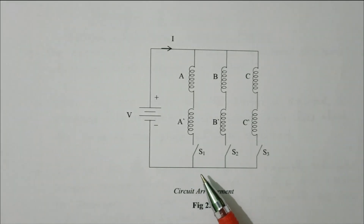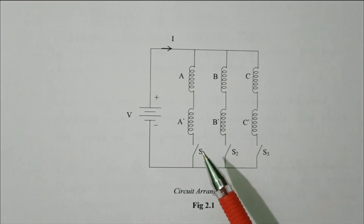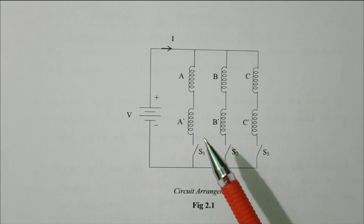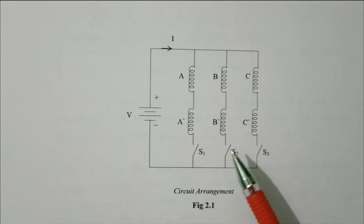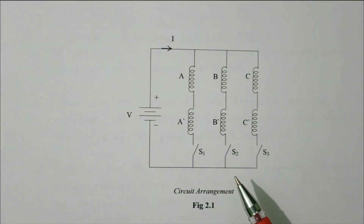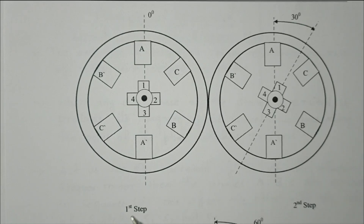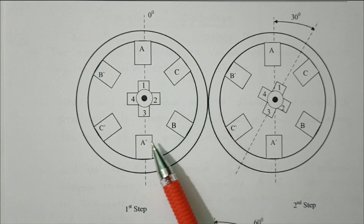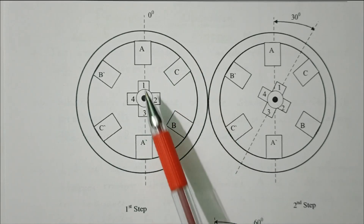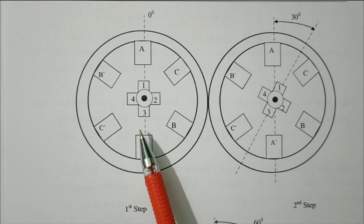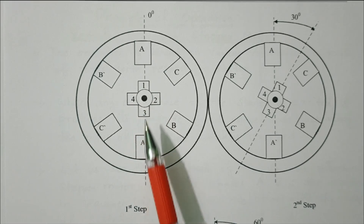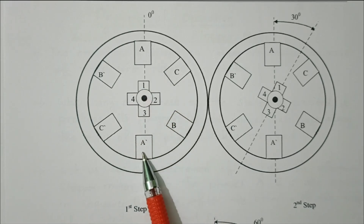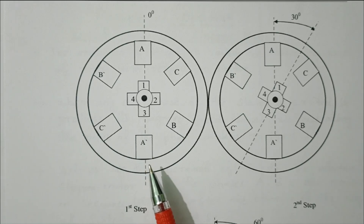Now we will see the detailed view of how it is excited. First, consider coil a/a-dash is excited, then b/b-dash, then c/c-dash, and we will see what happens in the rotation of the rotor. This is the first step diagram: coil a/a-dash is excited at around 0 degrees. The rotor is aligned with the stator — a/a-dash is excited so it becomes a magnet, and the rotor poles are aligned with the stator poles. That is: rotor pole 1 aligned with a, rotor pole 3 aligned with a-dash. This is the minimum reluctance position, called the initial position or 0 degree — step 1.